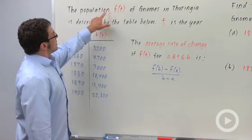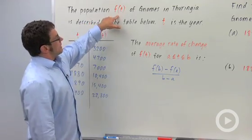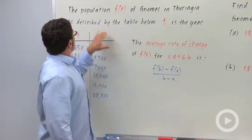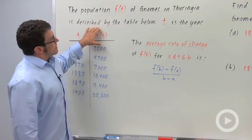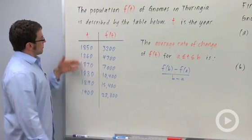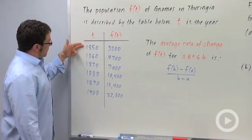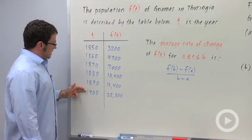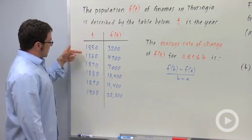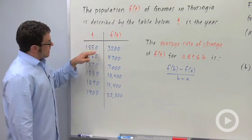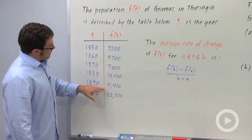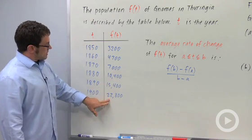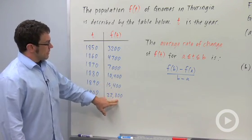The population, f of t, of gnomes in Thuringia is described by the table below. t is the year. We have the years from 1850 to 1900, skipping by tens, and the population starting at 3,200 and ending at 22,800.